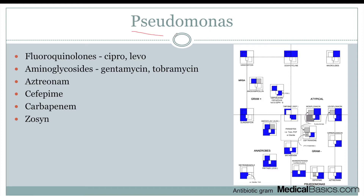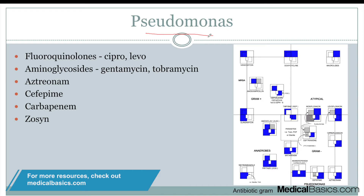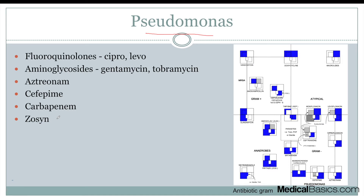Finally, what covers pseudomonas? This is another commonly asked question. The antibiotics are fluoroquinolones, aminoglycosides, aztreonam, cefepime, carbapenems, and Zosyn. I have no other way to remember these besides Sketchy Micro — similar to anaerobes, there's a specific page with the Mona Lisa painting in a bathtub, and that's how I remembered the pseudomonas antibiotics. Pictures help tremendously for both pseudomonas and anaerobes.